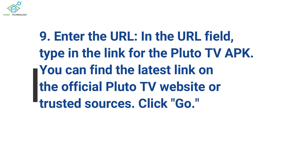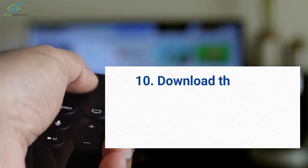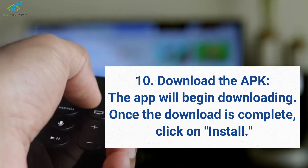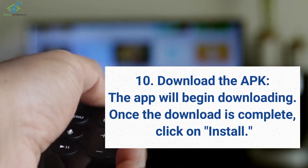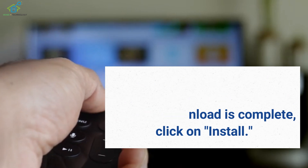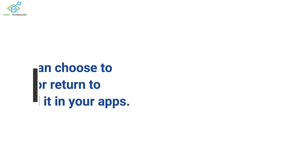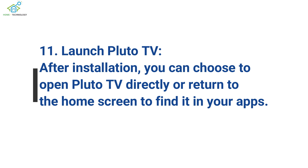Step 9: Enter the URL. In the URL field, type in the link for the Pluto TV APK. You can find the latest link on the official Pluto TV website or trusted sources. Click Go. Step 10: Download the APK. The app will begin downloading. Once the download is complete, click on Install. Step 11: Launch Pluto TV. After installation, you can choose to open Pluto TV directly or return to the Home screen to find it in your apps.